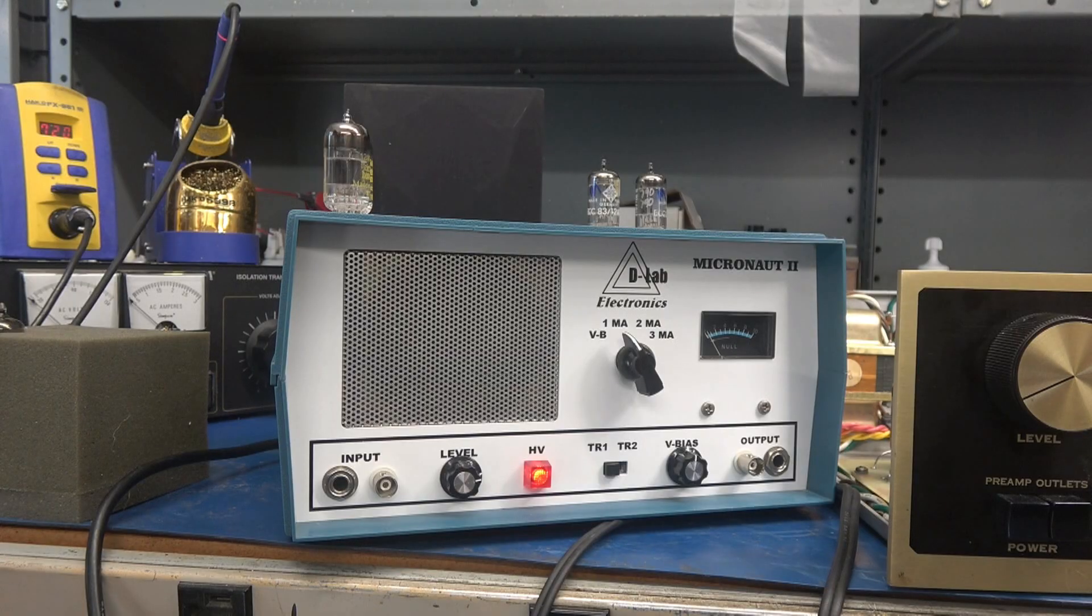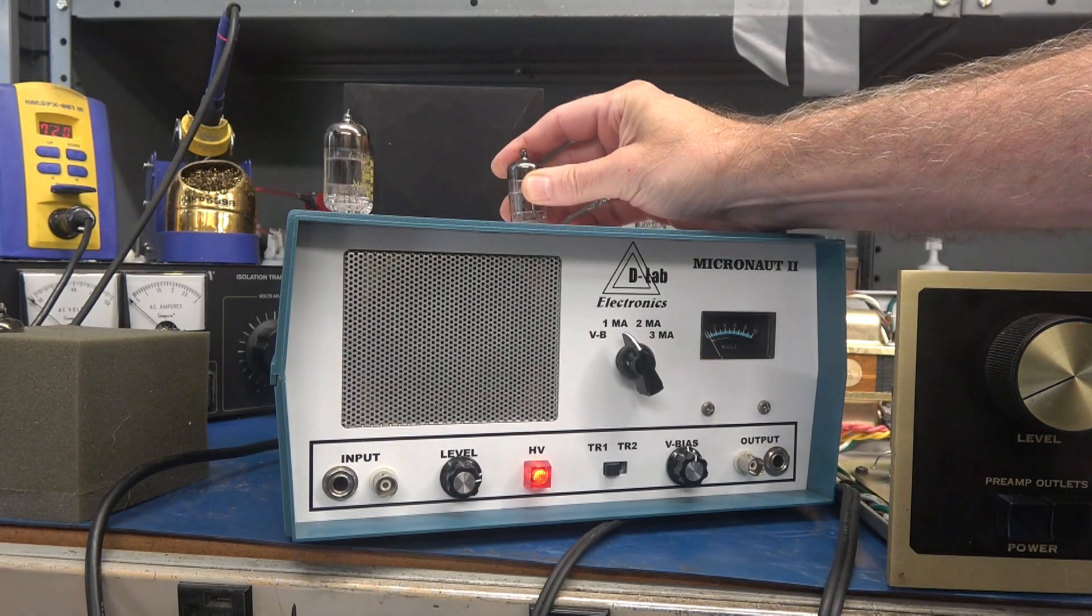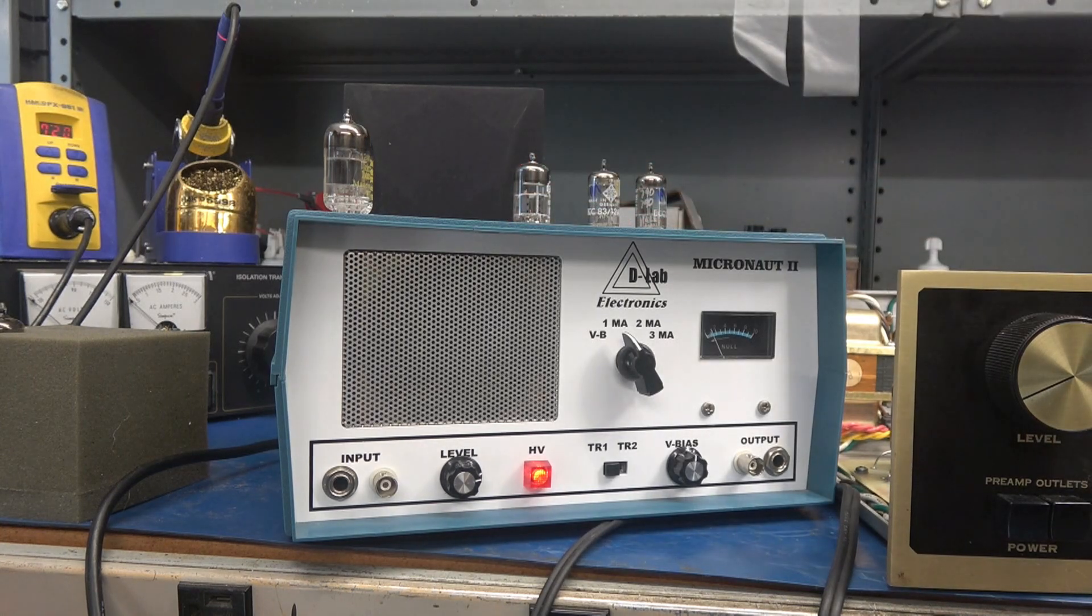I've already sorted through the 12AX7s that are in this preamp, utilizing the Micronaut. So here is a good 12AX7 which would go back in the preamp.